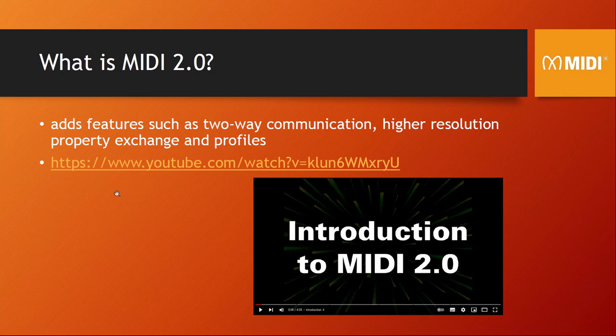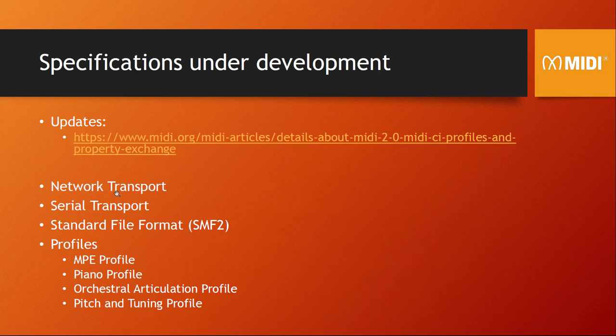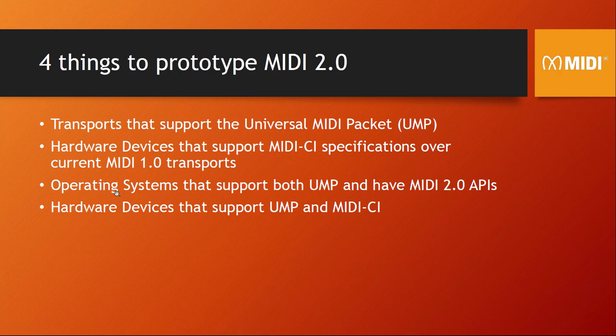Currently there are already changes and updates to the specification happening, and there's a link in the description where you can read about that. The upper part of that page has updates about specification changes. More things are currently in the specification phase: not only the USB mapping was defined, but now also a network transport is in the works, as well as serial and other things like new file formats and specific profiles for devices.